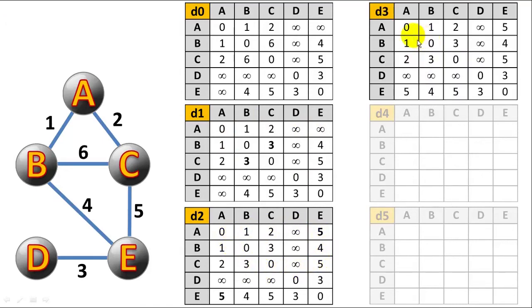In iteration three, we're considering stops at vertex C. And in iteration three, nothing changes. We actually don't find a cheaper path to anything by stopping at C along the way.